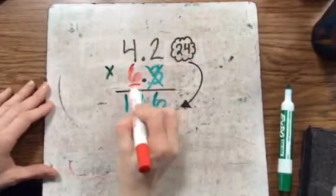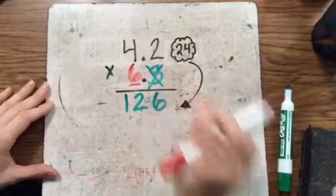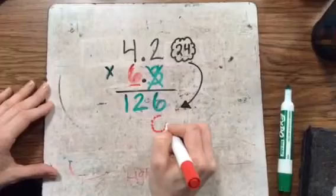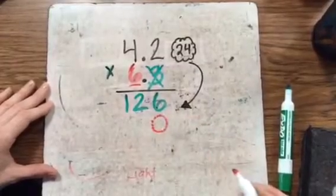So since the 6 is 10 times larger than the 3, the way the place value works, I'm going to make sure to put my placeholder here to account for that.